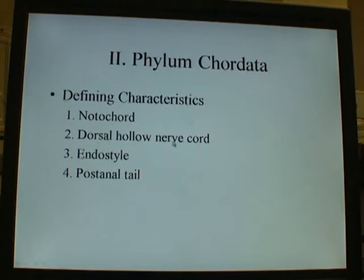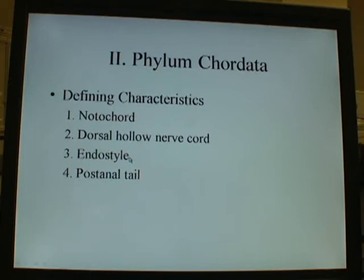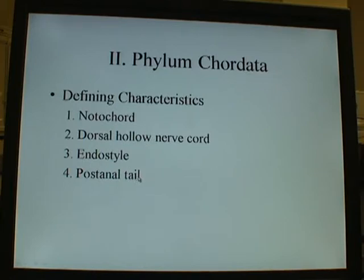The second synapomorphy is a dorsal hollow nerve cord — basically a spinal column — with an anterior specialized region called the brain in more derived taxa. The third is an endostyle, an organ that secretes mucus in ancient taxa, but metamorphoses into the thyroid in lampreys and all other more derived vertebrates. The fourth is the post-anal tail — beyond the anus there is a tail.